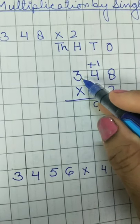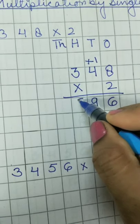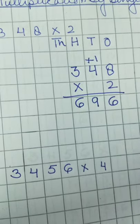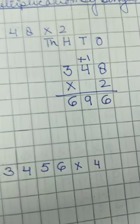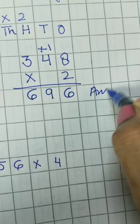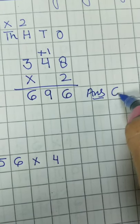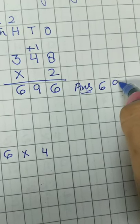2 times 3 is 6. We will write 6 here. So our answer will be 696.